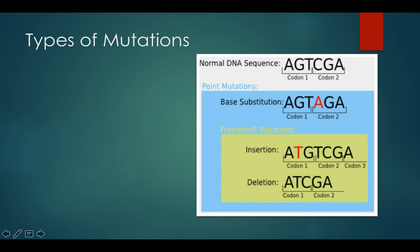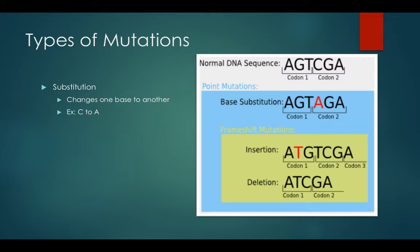So what are the types of mutations? The first one is called a substitution — this is basically changing one base to another. In this case, you see you have AGT, CGA. A base substitution would be changing one letter to another. So rather than having CGA here, the C gets turned into an A. That's an example of a substitution.